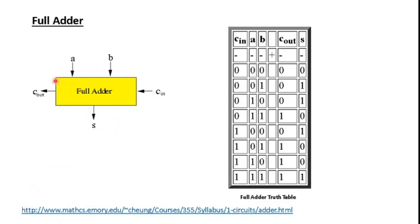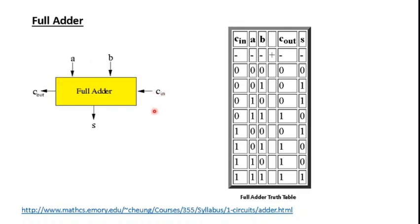This is a symbolic representation of a full adder circuit. It takes two inputs A and B along with a carry input Cin, and it will perform the operation A plus B plus Cin. These three bits A, B, and Cin will be added and you will get two outputs: one is the sum and the other is carry out.